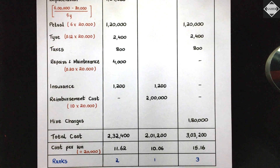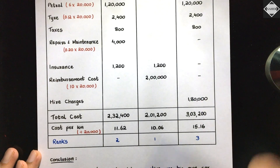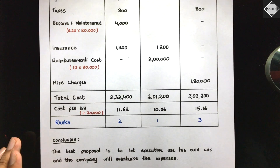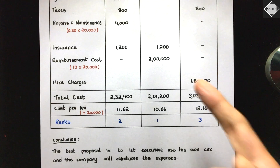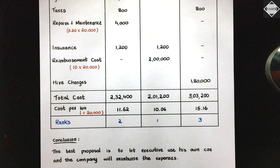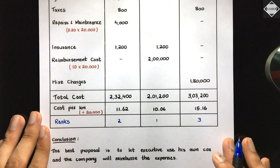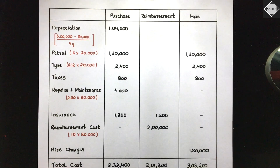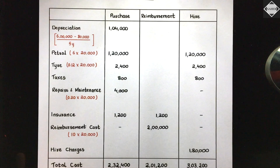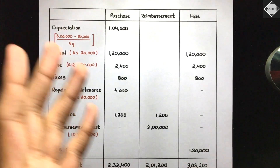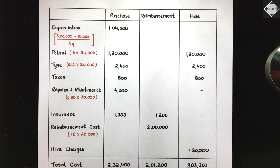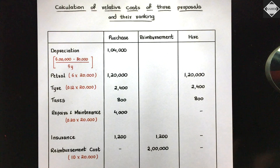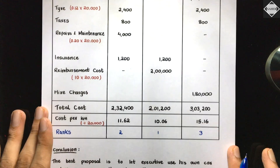The conclusion and suggestion to the company: the best proposal is to let the executive use his own car, with the company reimbursing expenses at 10 rupees per kilometer and bearing the insurance cost — it has the lowest total cost. You could also present this categorized under standing charges, running charges, and maintenance charges, but a direct line-by-line approach is equally acceptable. There are no strict formats in costing. See you in the next video!